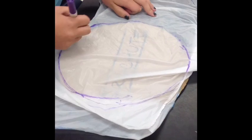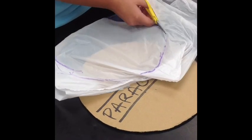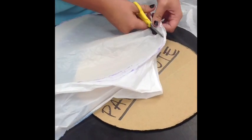Use the parachute template to make a circle. Now cut that circle out and this will be the starting of your parachute.